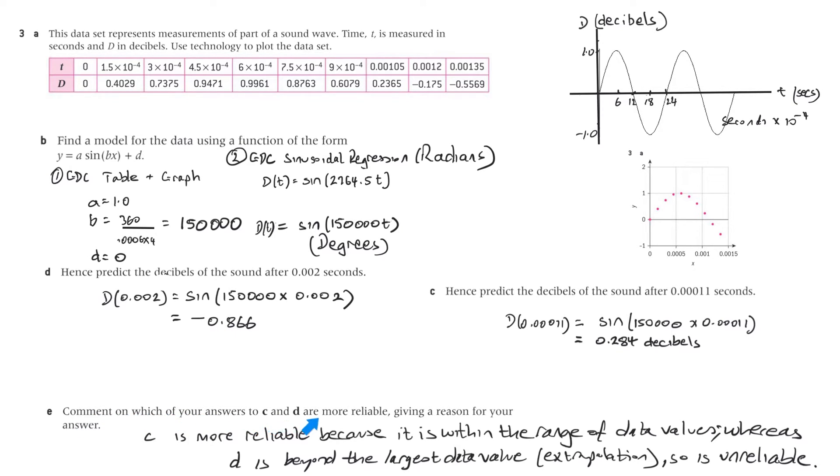E, comment on which of your answers to C and D are more reliable, giving a reason for your answer. So which is more reliable? So this particular one here, as you can see, we'll just read it here. It says C is more reliable because it is within the range of the data values. See, these values only go up to 0.00135 seconds and they wanted to get an answer for 0.002. So that's whereas D is beyond the largest data value, extrapolation, so is unreliable. So this would be more accurate because it's within the data set where this time here is outside. We'd have to go further up here, we don't have information on that, measured data on that.